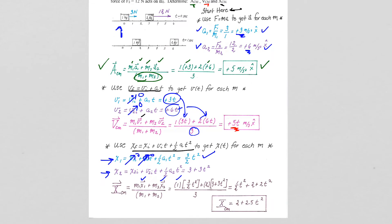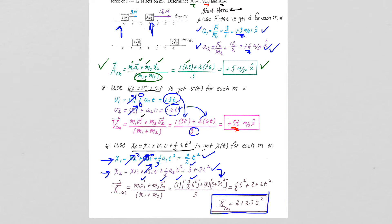X2 did not start out at position zero — particle two, or M2, started out at position three. It did start from rest, so the V initial term is zero. One-half times acceleration six divided by two gives three, so X2 equals three plus three T squared. We plug M1 times X1 plus M2 times X2 divided by the total mass to get our position as a function of time for the center of mass.